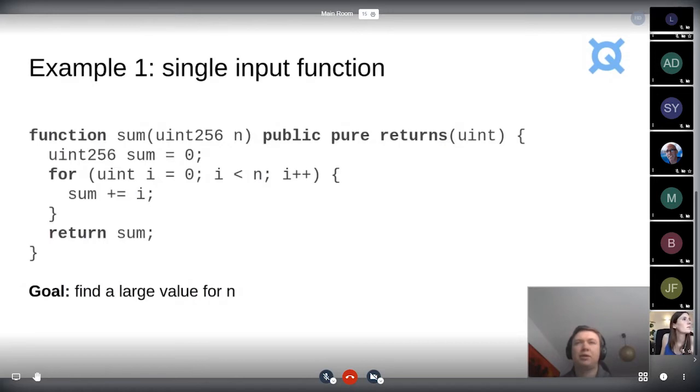Here's a simple example of a pure function that just receives value as input, an integer value as an input, and it iterates over all integer values from zero to that number, sums them up and returns the sum. The goal of the reinforcement learning agent would be here to find the right value for N which leads to this kind of out of gas error. And we're going to see later how this code is fixed.